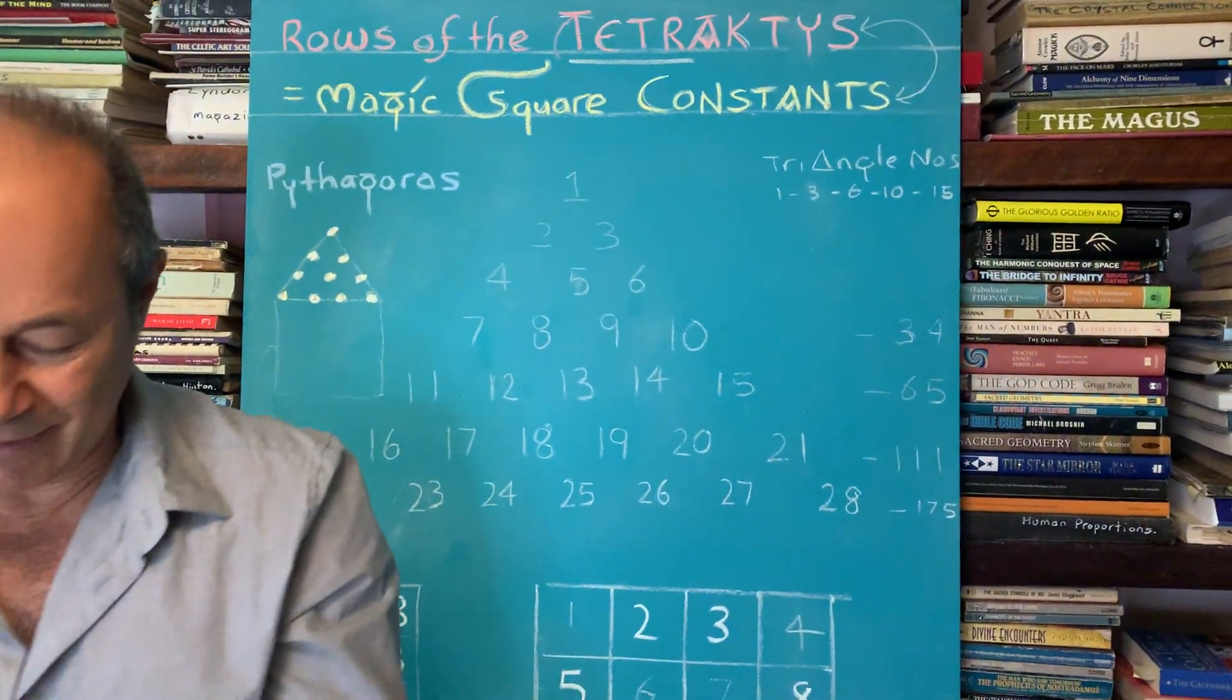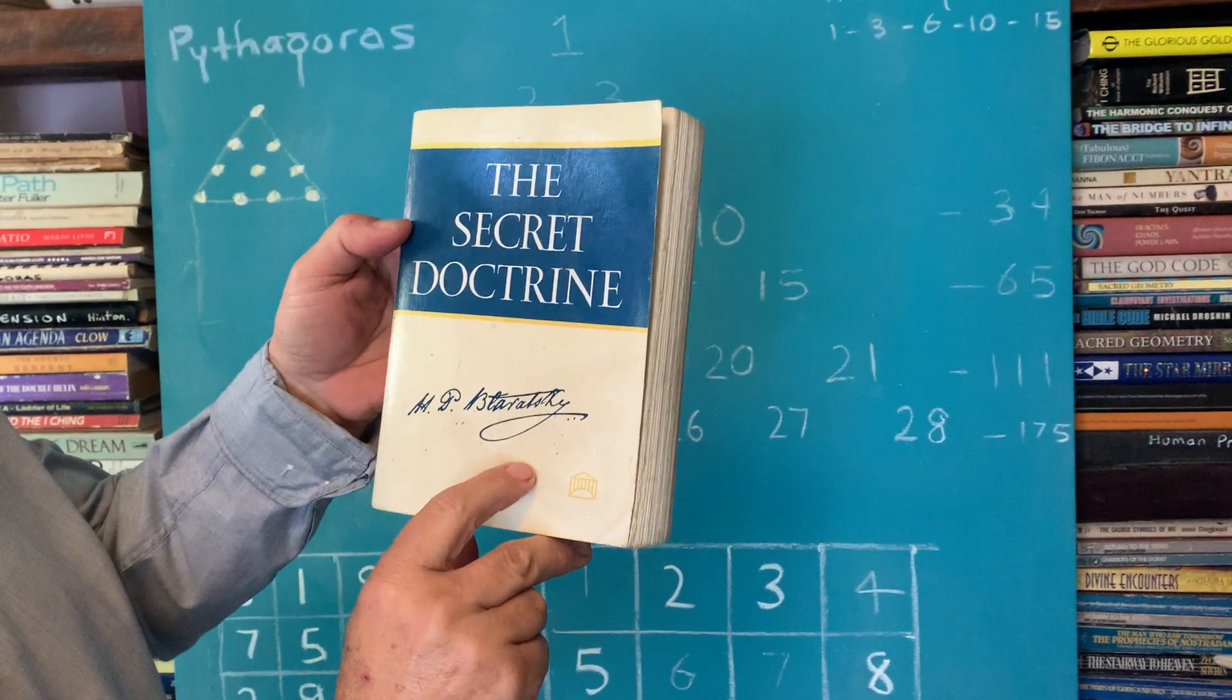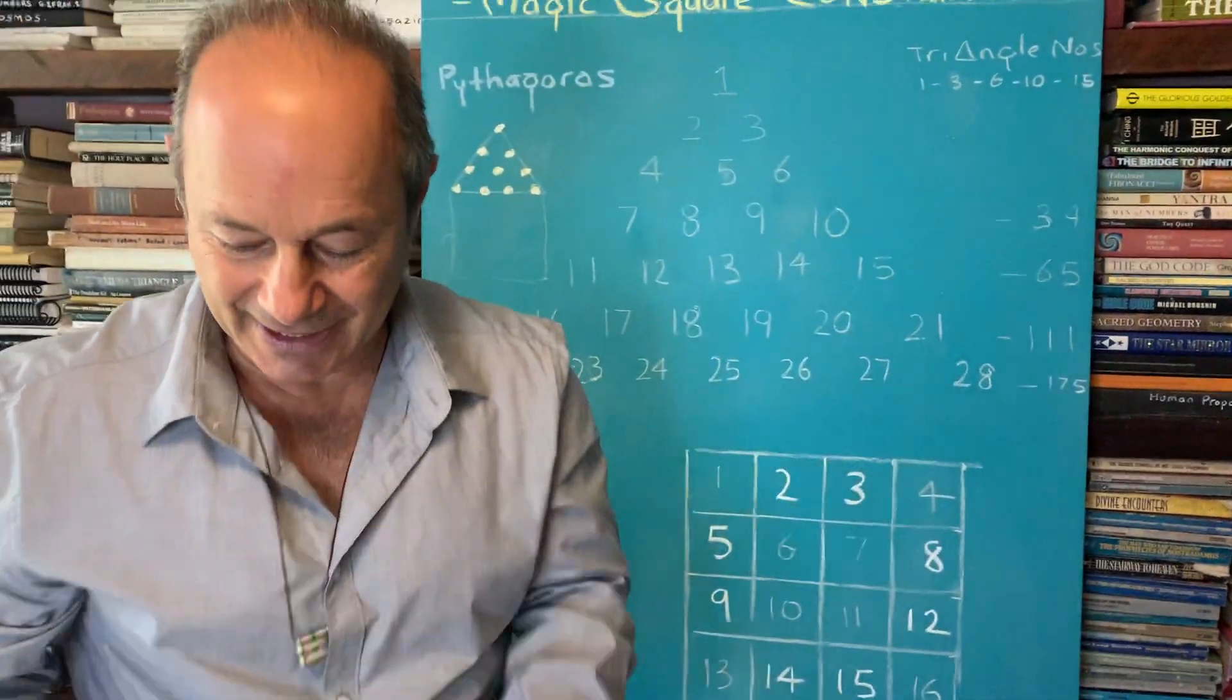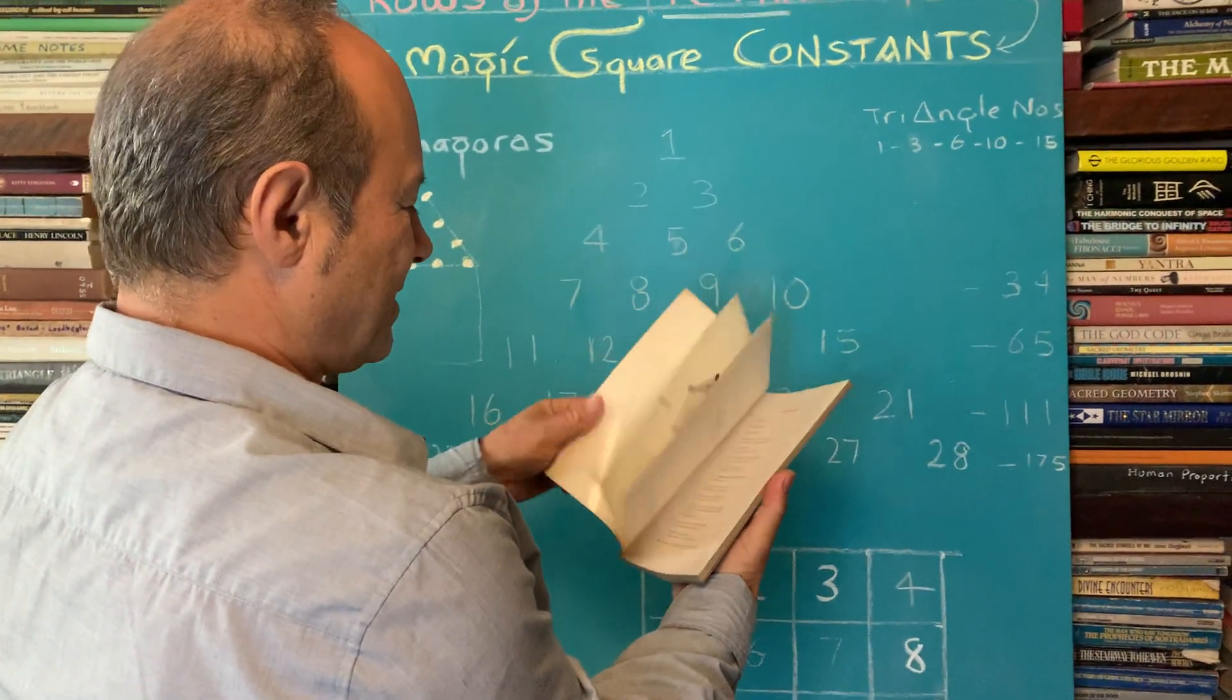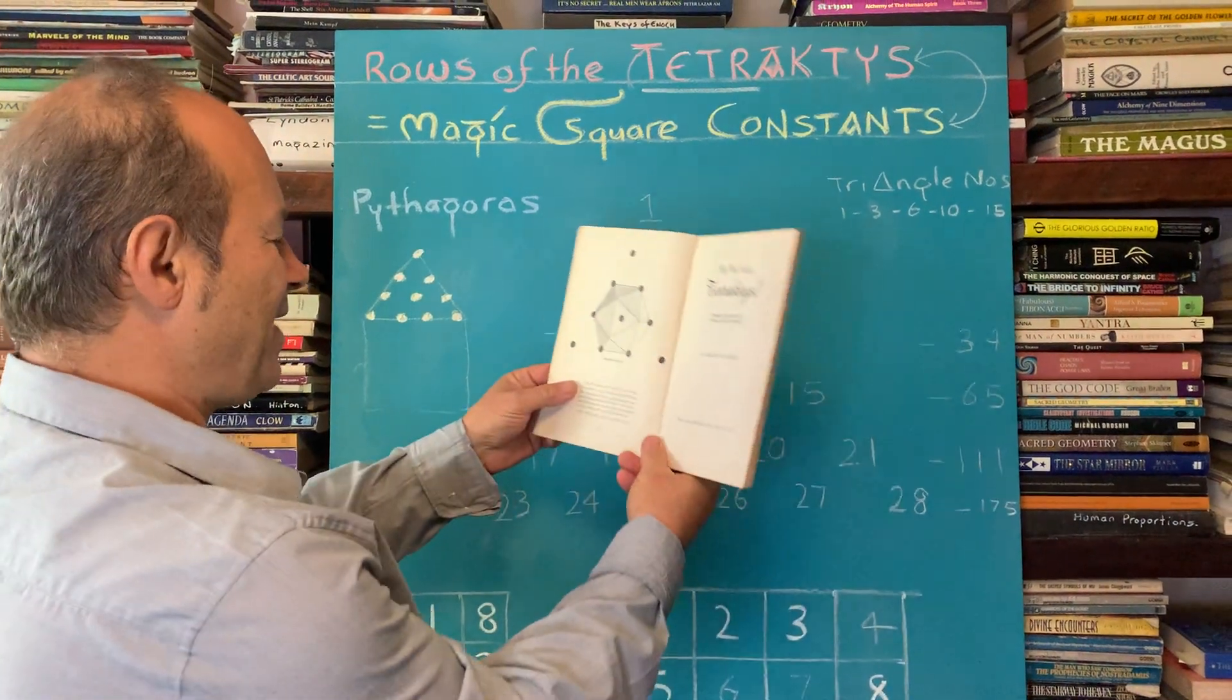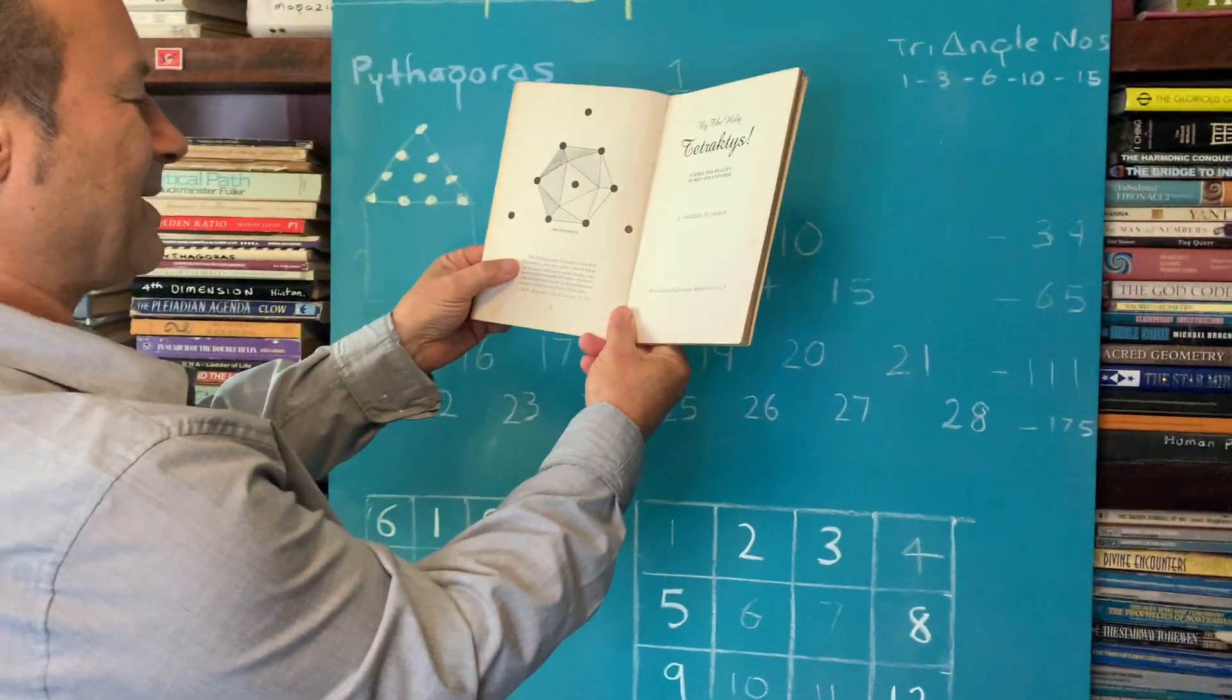In this book here, I'm going to read you a paragraph from the secret doctrine and I study a lot of the works of Madame Blavatsky, the theosophist. And in this book here, the Holy Tetraktys, I'm just going to read you one little paragraph.